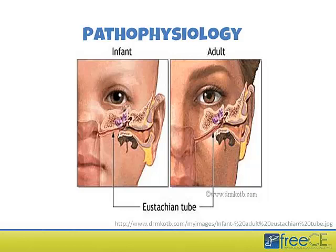The eustachian tube in infants is much flatter and more horizontal compared to adults, where there is a greater gradient that bacteria would need to travel between the external ear and middle ear. Because of this flatter, more horizontal eustachian tube, bacteria are much more easily able to gain access to the middle ear in infants and children, which is the key pathophysiologic explanation for their increased susceptibility.